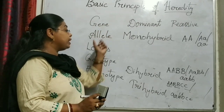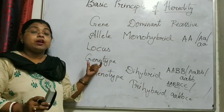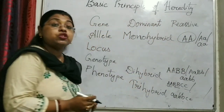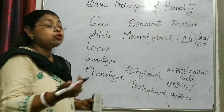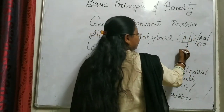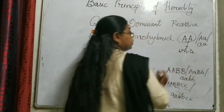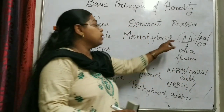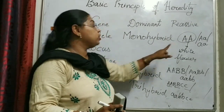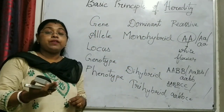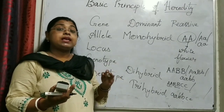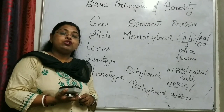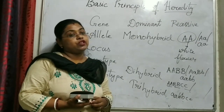So we have gene, alleles, locus, and genotype. The genetic constituent is the genotype — for example, capital A capital A is a genotype. If this genetic constituent codes for white flower, then white flower is the phenotype. So genotype is the genetic makeup and phenotype is what is expressed. In the next class, we will deal with the next level of basic genetics. Hope you have understood. If you want to ask any questions, you can do it in the comment section. Thank you.